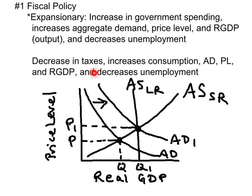A decrease in taxes will increase disposable income and therefore increase consumption. It will raise aggregate demand, price level, and real GDP, and also decrease unemployment. The ADAS model shows the rightward shift of aggregate demand, which would increase the price level, increase output, and therefore reduce unemployment.